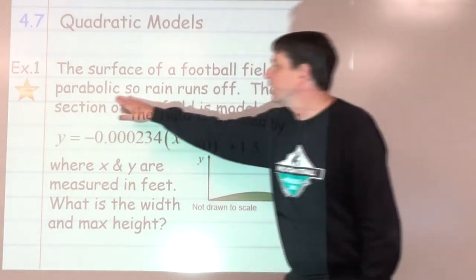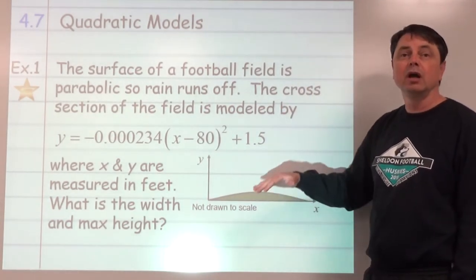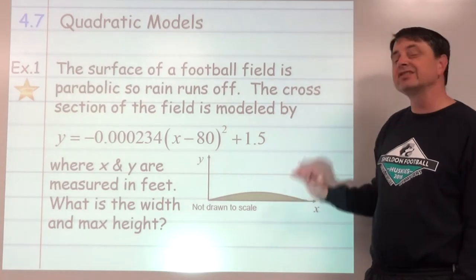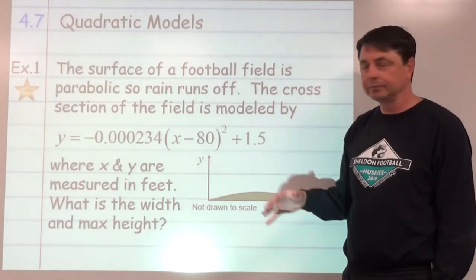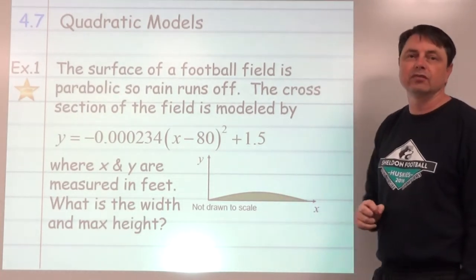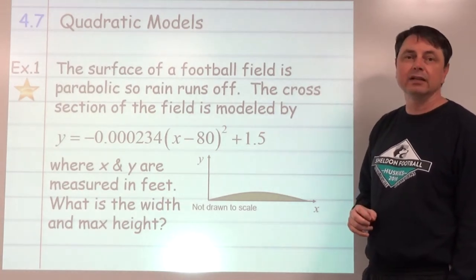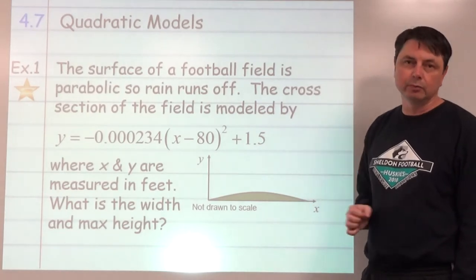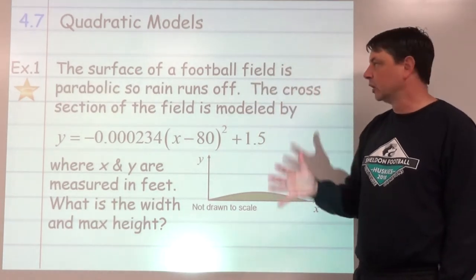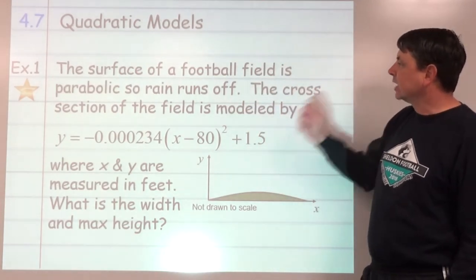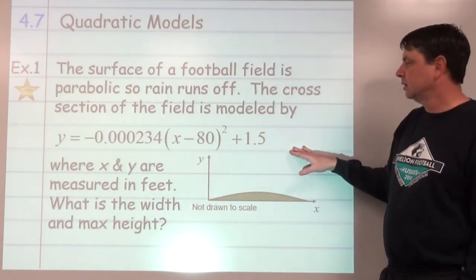We're starting out with the surface of a football field that is parabolic in shape so that the rain runs off. This would be common for older grass fields that don't have great drainage because they don't want the water to pool up and make puddles. The field is crowned, as they would say, to have it run off. The cross-section of the field is modeled by the equation given here where x and y are measured in feet.